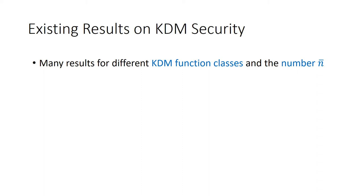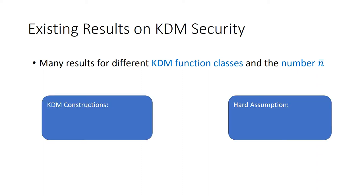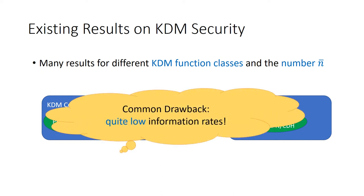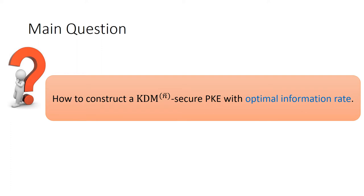There exist many PKE or IBE schemes that are KDM-circuit secure with respect to different KDM challenging function classes and different numbers of public keys. In particular, all the schemes are based on various assumptions such as DDH, DCR, QCR, QR, LWE, LPN, or CDH. However, all these existing schemes have a common drawback: their information rates are quite small. So my question in this paper is: how to construct a KDM n-bar circuit PKE with optimal information rate?